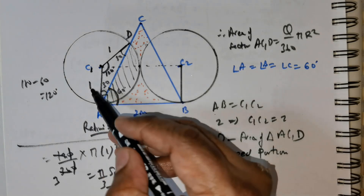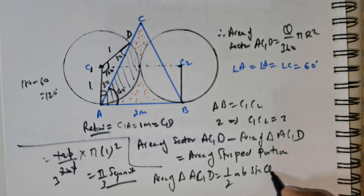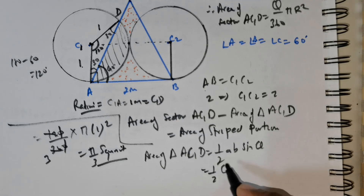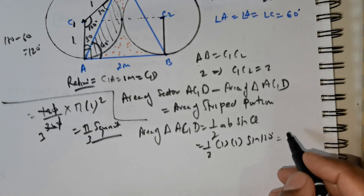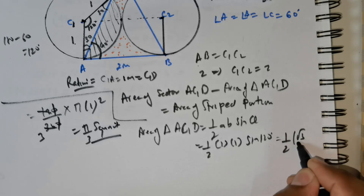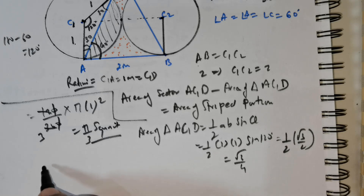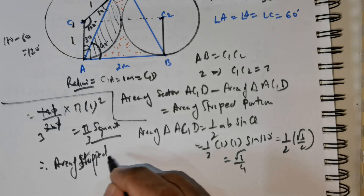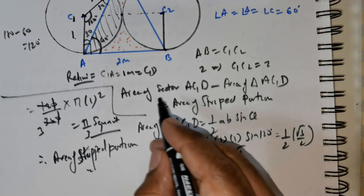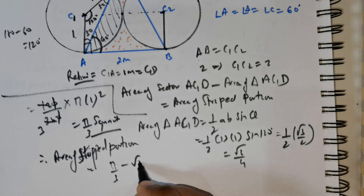Now what is the area of the triangle? This side is 1 meter and this side is 1 meter. Area of triangle AC1D equals half times AB times sine theta. That equals 1 over 2 times 1 times 1 times sine 120. Sine 120 is root 3 over 2, so 1 over 2 times root 3 over 2 gives root 3 over 4. Therefore the area of the striped portion is area of the sector pi over 3 minus area of the triangle root 3 over 4.